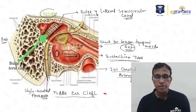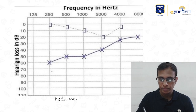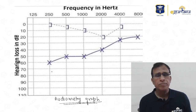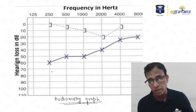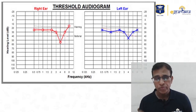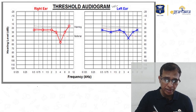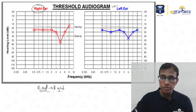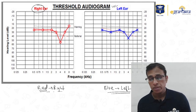This is how an audiometry graph looks. For the MCI exam, what you have to remember: if the audiogram is shown in red color, it is for the right ear — R for right, R for red. And if it is blue color, it is for the left ear. So right ear is red, left ear is blue.